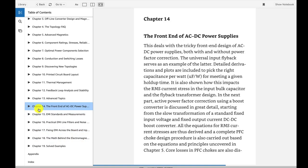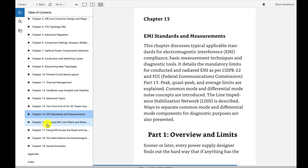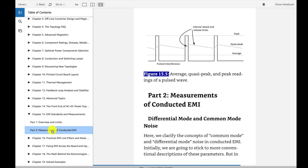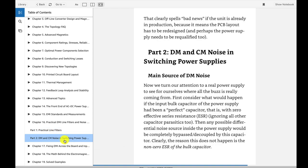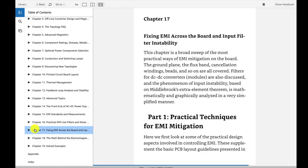And then Chapter 15, EMI standards and measurements. It goes into an overview and then the measurements of conducted EMI. Then Chapter 16, the practical EMI line filters and noise sources and power supplies. Talks about line filters here and then comes down here, breaks it up into DM, which is differential mode, versus CM, which is common mode. Sometimes DM is known as normal mode. Then Chapter 17 is fixing EMI across the board and input filter instability. Another really important topic.